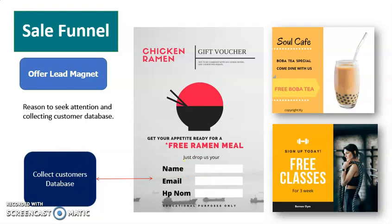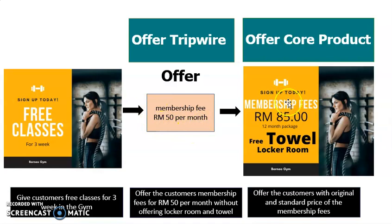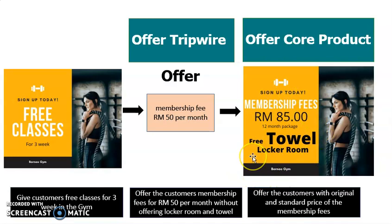After that, we offer them with a tripwire — that means we offer them a cheaper product. For example, we offer them a membership for 50 ringgit per month for the first month only. After they use it and are happy with our services or product, then we can offer them the core product. The core product is at the normal price — for example, 55 ringgit for a 12-month package with a free towel and locker room. This is the standard product that we offer to everybody.